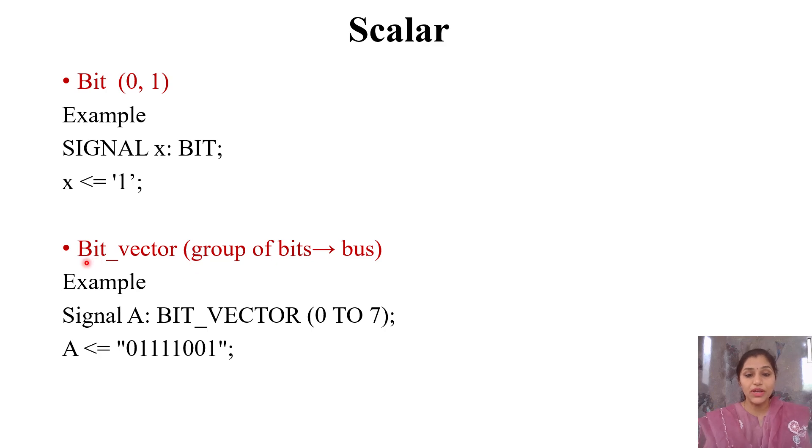Bit vector is an array data type. Bit means 1-bit value, whereas bit vector means a group of bits. Bit vector is basically an array or group of bits, which can be 2 bits, 3 bits, 4 bits, or n number of bits. We can call it a bus.